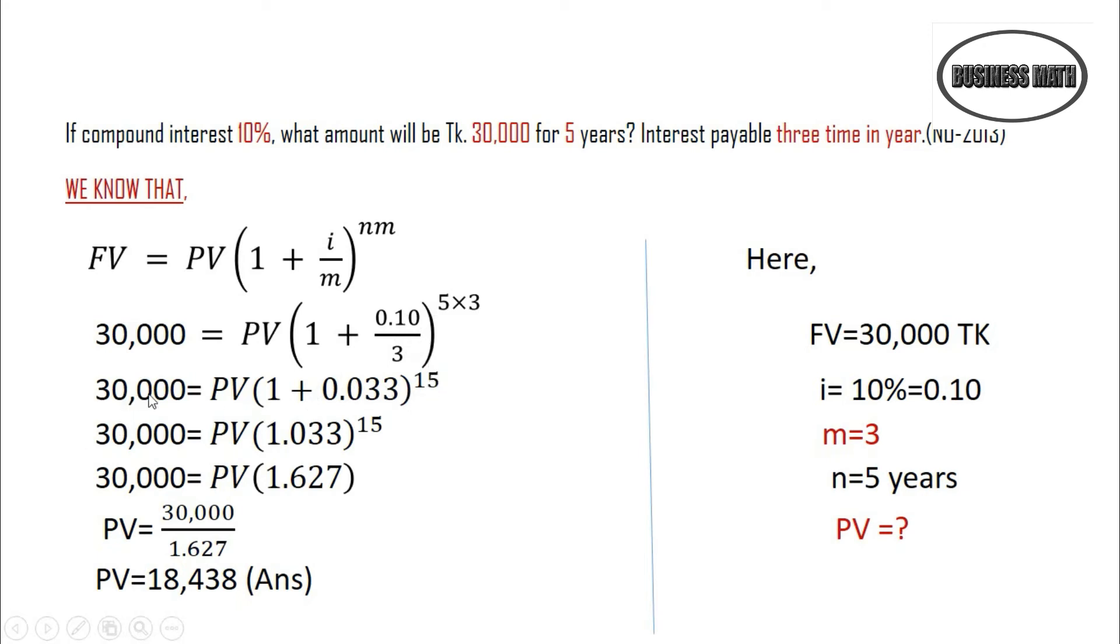30,000 equals PV times 1.033 raised to the 15th power. The result is 1.627. So we have 30,000 equals PV times 1.627.